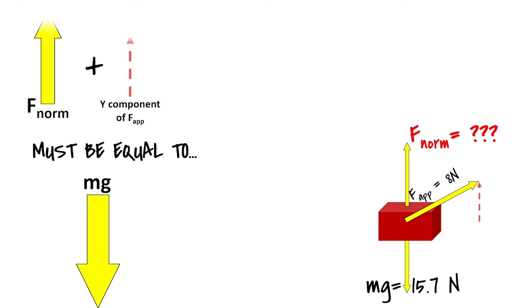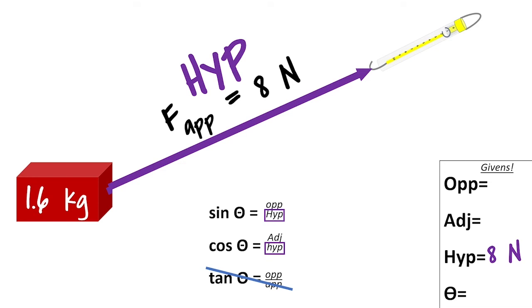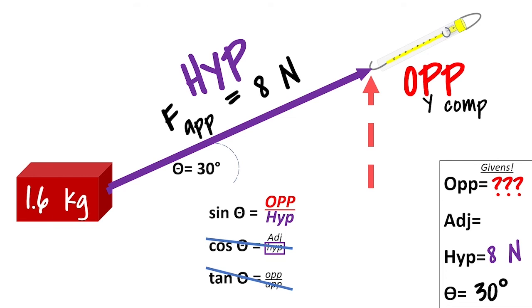The sum of all things acting down on the object has to be equal to the sum of all things acting up on the object. The weight of the brick, 15.7 newtons, has to be equal to the sum of the Y component of the applied force and the normal force. Remember, 8 newtons is the applied force. And it serves as the hypotenuse here. Theta is 30 degrees still. But this time, we're looking for the Y component. And it's opposite the angle. So we're going to do 8 times the sine of 30 degrees to get the Y component. And we're lucky because the sine of 30 degrees is, what, half? Half of 8? 4. 4 newtons.